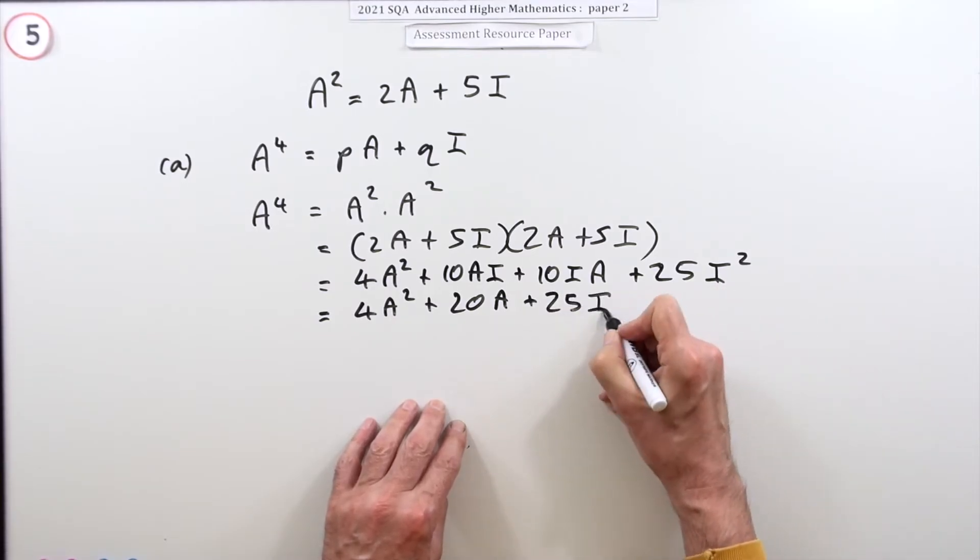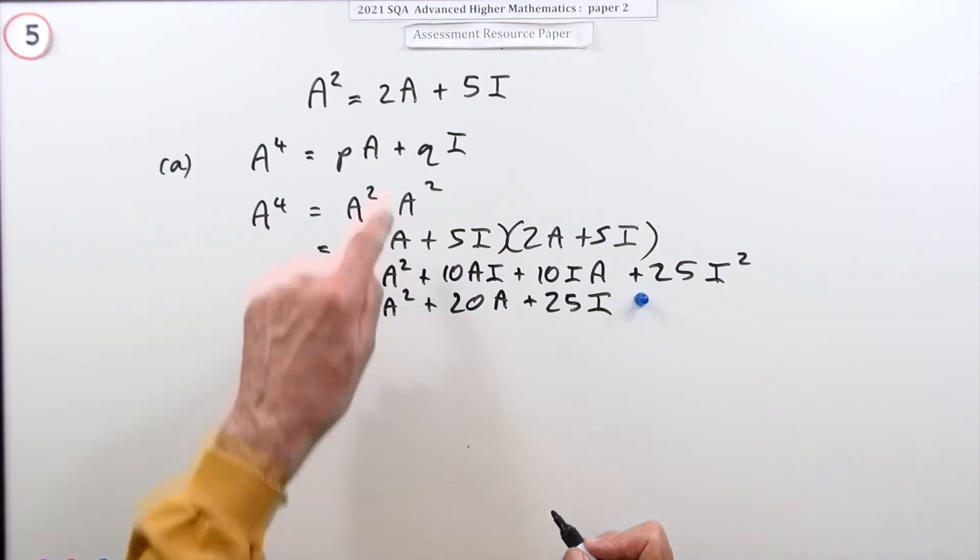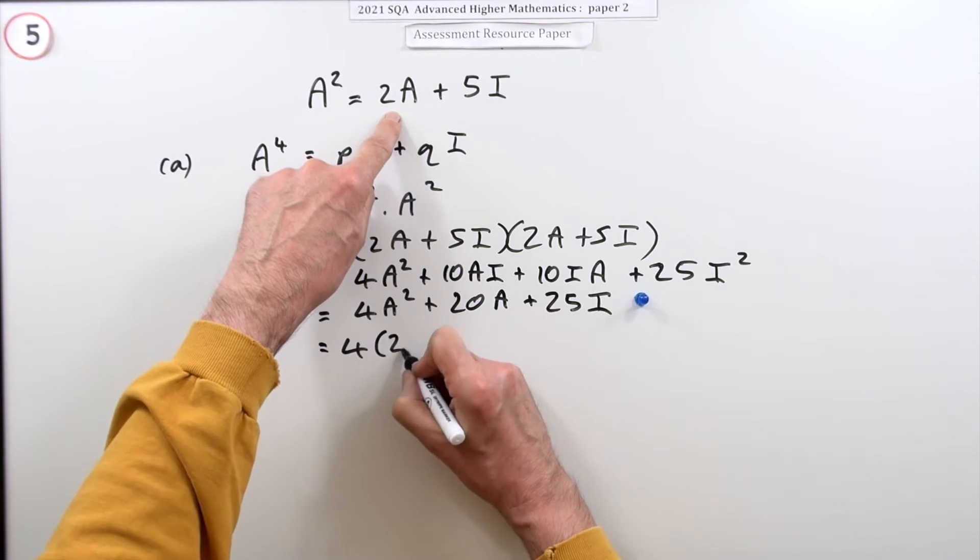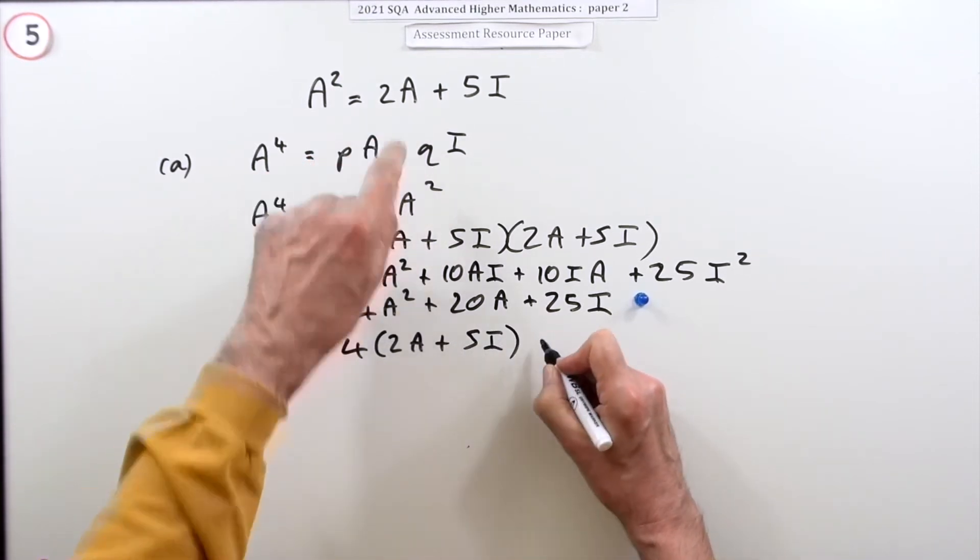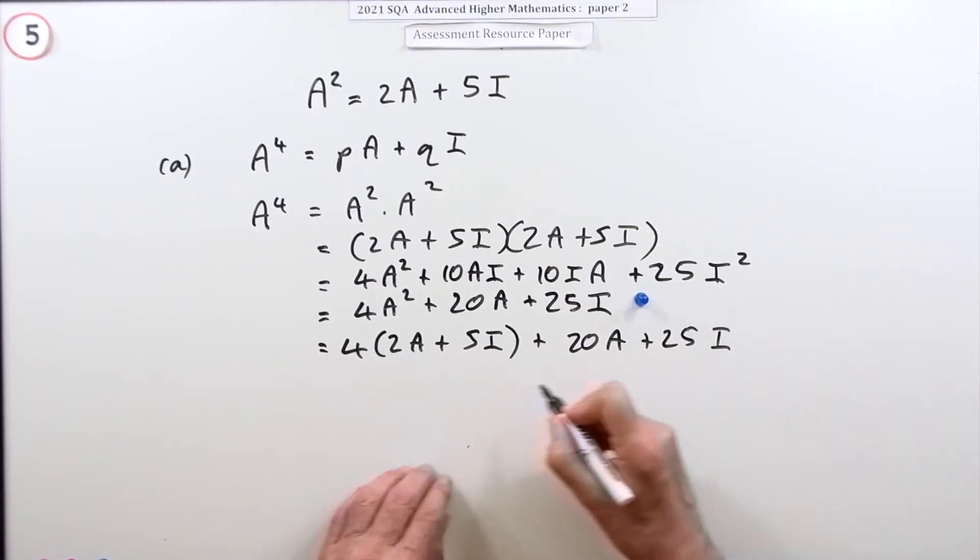Now I² is just I, so 25I. So far that would be the first mark. Now you can call this in, so that's the same as four times (2A + 5I) plus the 20A plus the 25I.